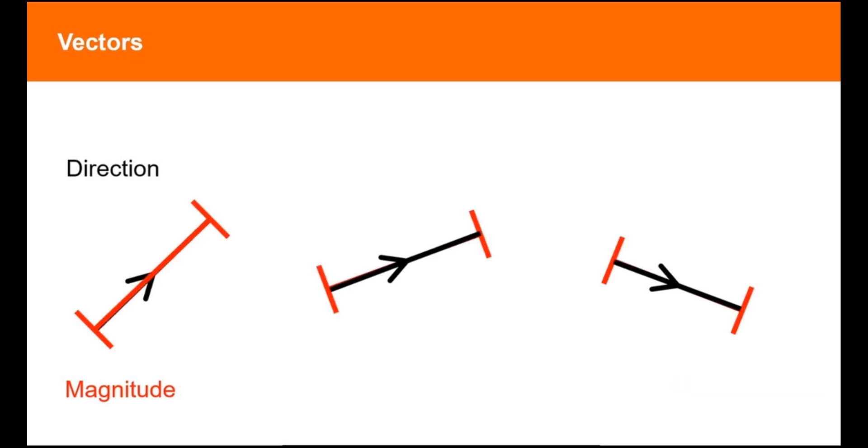When looking at a vector diagram, the length of the line shows its magnitude and the arrow represents the direction of the vector.